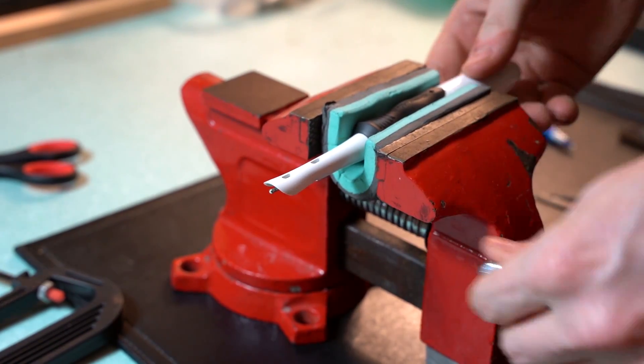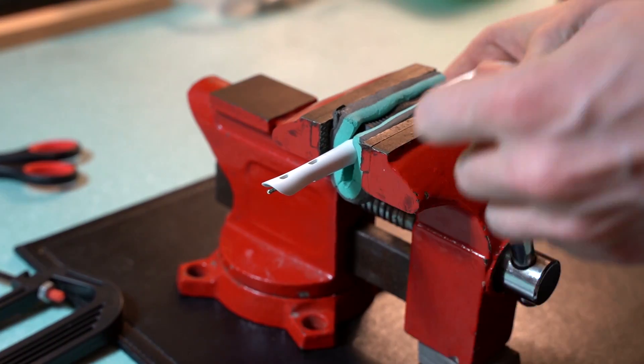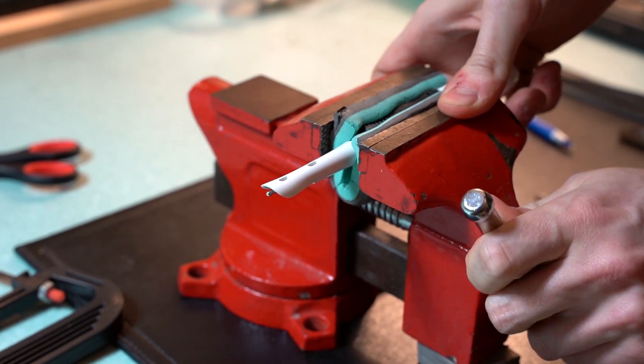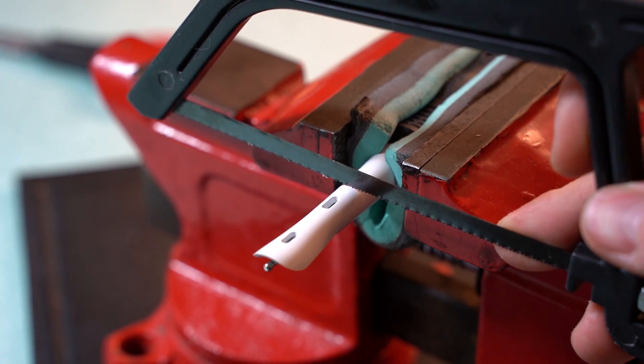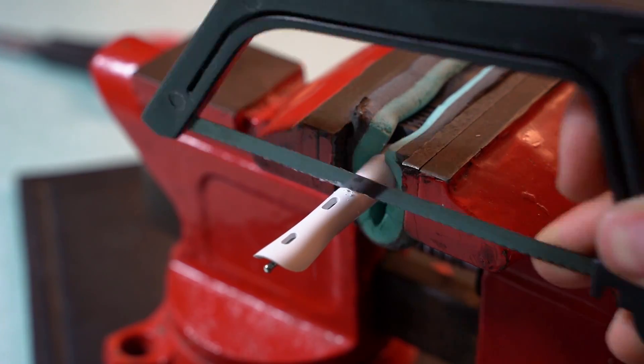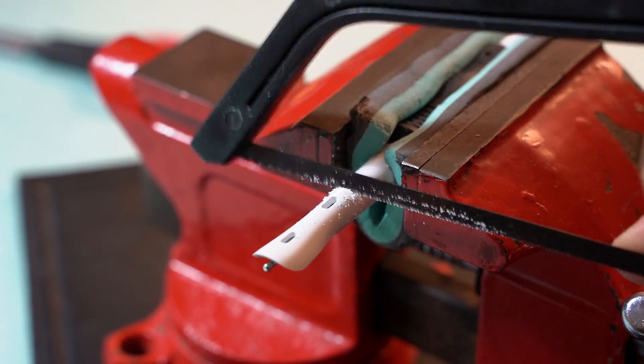The toothbrush is secured in a vise so that the plastic around the metal piece can be cut off. I used a little saw to cut the plastic off. I cut a bit too low and should have cut closer to the second oval hole.